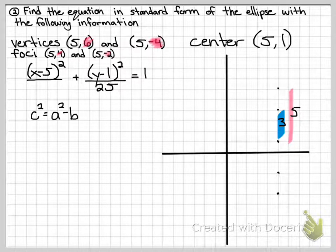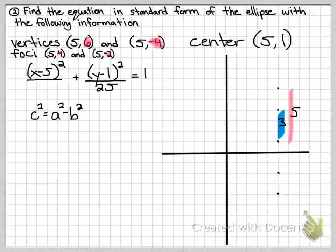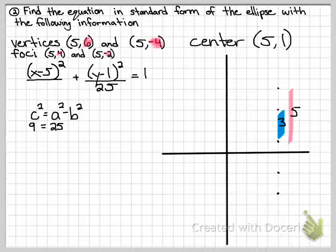Here's our c squared equation. I already know some of this. I know a squared, it's right under y minus 1, 5 squared is 25. I also know c, the distance from the center to the foci, was 3. So if I square that, it's 9 equals 25 minus b squared.